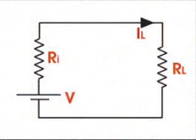Suppose we have a voltage source or battery whose internal resistance is Ri, and a load resistance RL is connected across this battery.